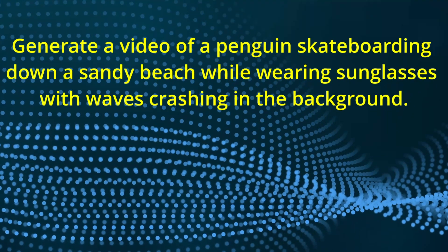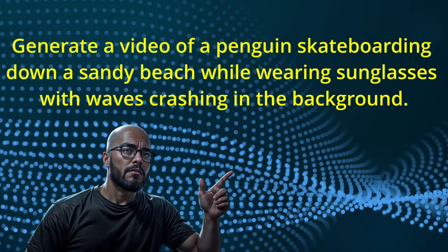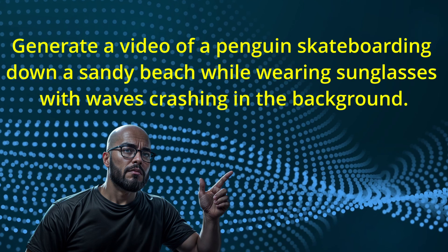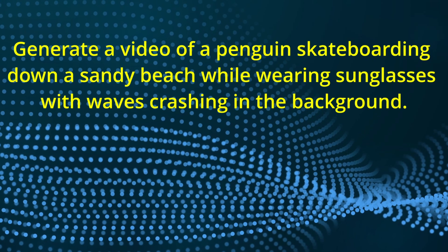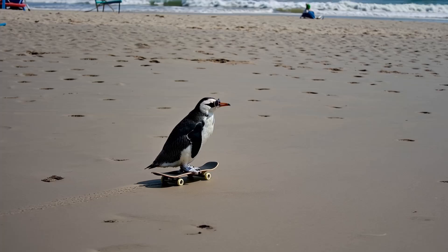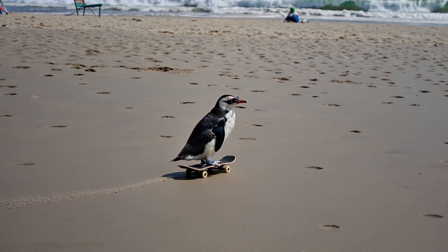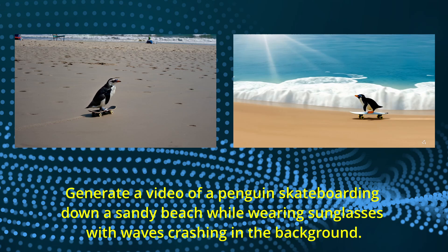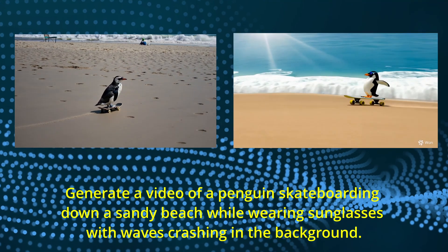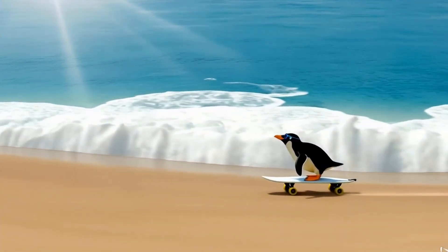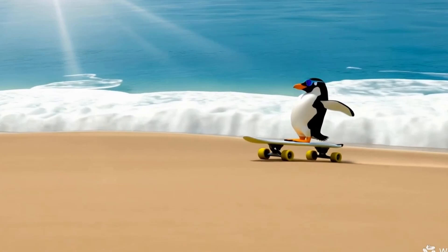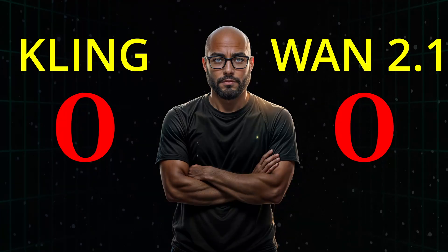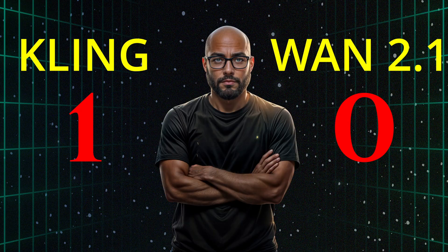Our first text-to-video prompt is: generate a video of a penguin skateboarding down a sandy beach while wearing sunglasses, with waves crashing in the background. The Kling generation looks great — the penguin and skateboard look lifelike, the waves are crashing in the background, and you can even see the tread of the skateboard. The WAN generation is also pretty good, more cartoonish, which is fine since I didn't specify a style, but the waves don't really move. I think Kling gets a slight win on this one, but it's close.